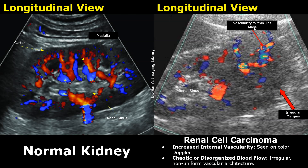We can see color Doppler signals inside the mass. This suggests prominent internal vascularity, which is a feature concerning for a malignant mass such as renal cell carcinoma. A benign mass and an abscess would not show internal vascularity on color Doppler, so this is a distinguishing feature.